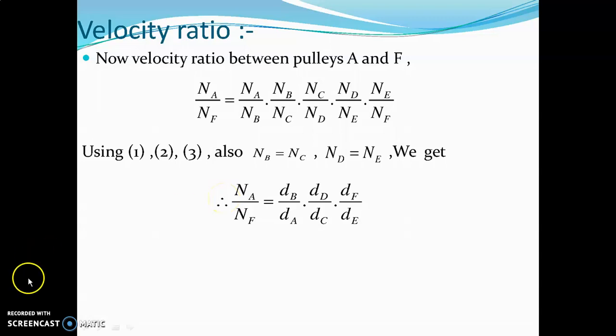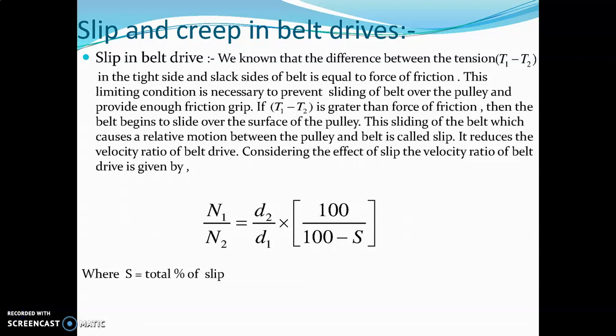Now, slip and creep in belt drives - very important topic. First, the slip condition: We know that the difference between the tension T₁ and T₂ in the tight side and slack side of the belt is equal to the force of friction. The tight side has higher tension T₁, and the slack side has lower tension T₂. The difference T₁ minus T₂ is equal to the force of friction. This is the limiting condition.